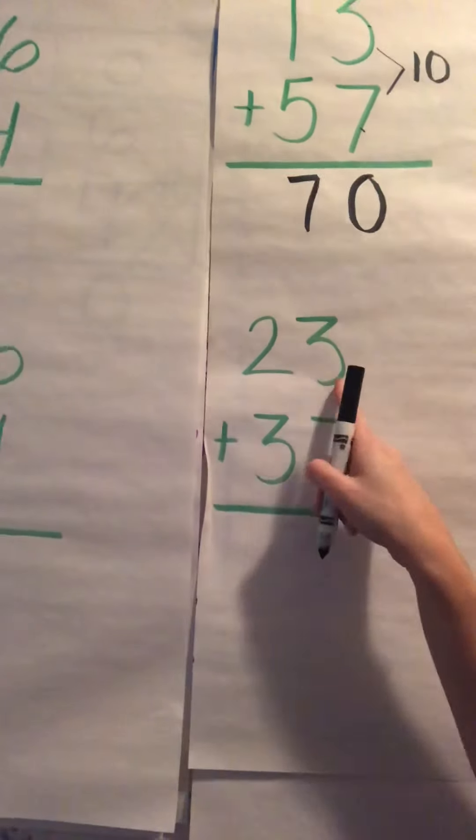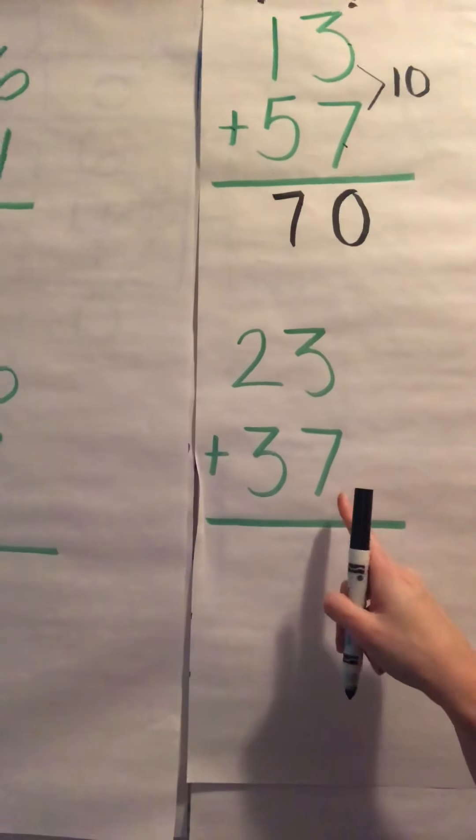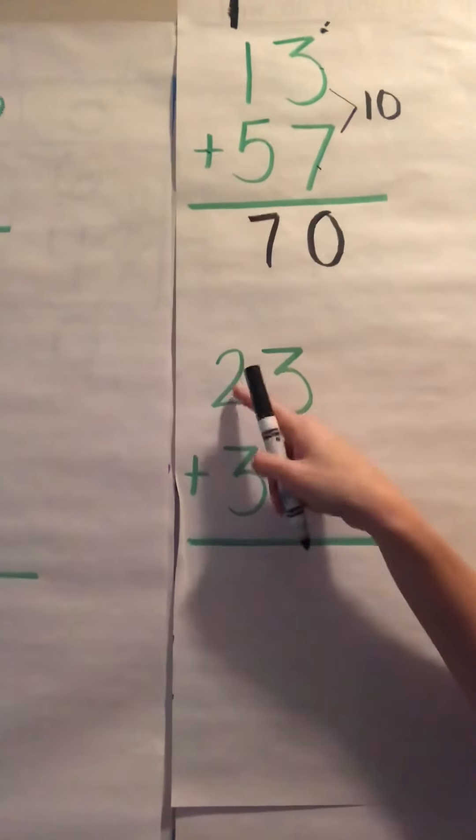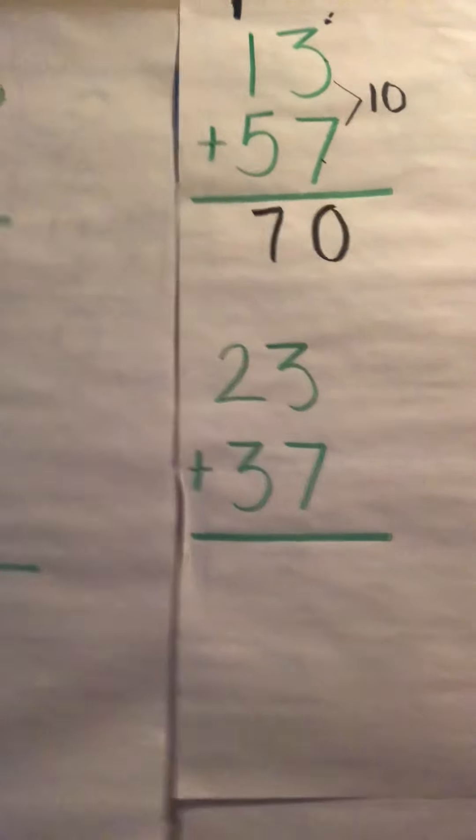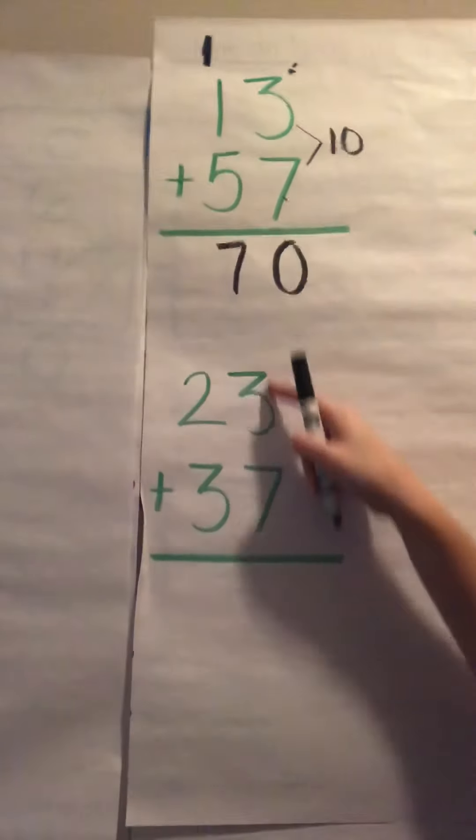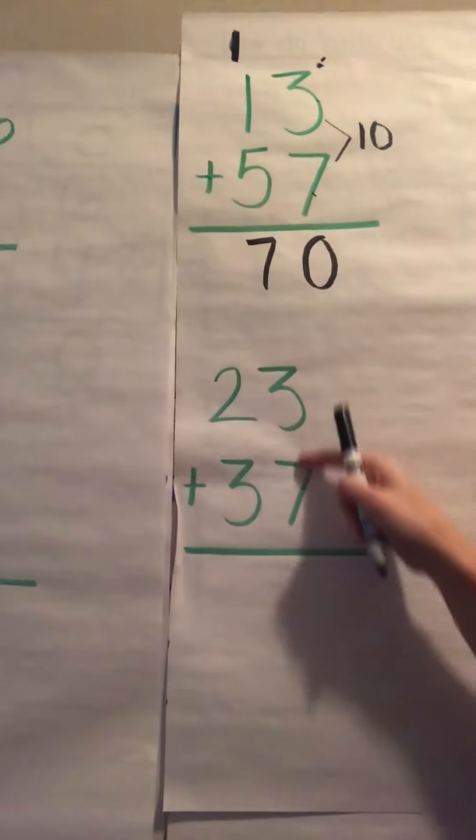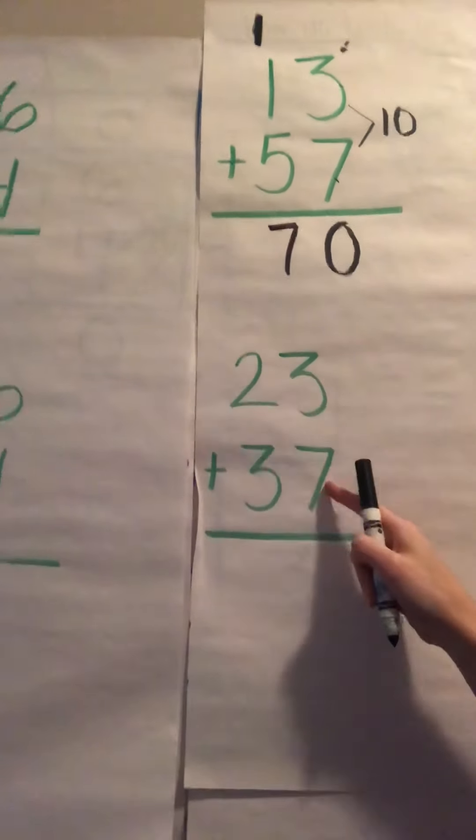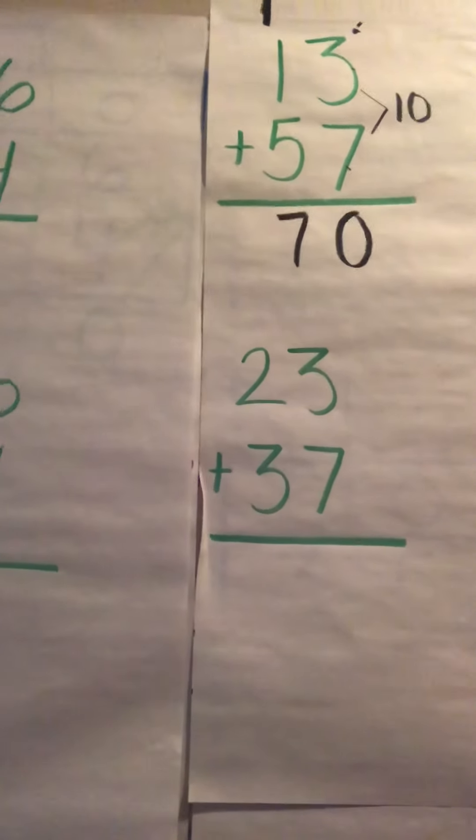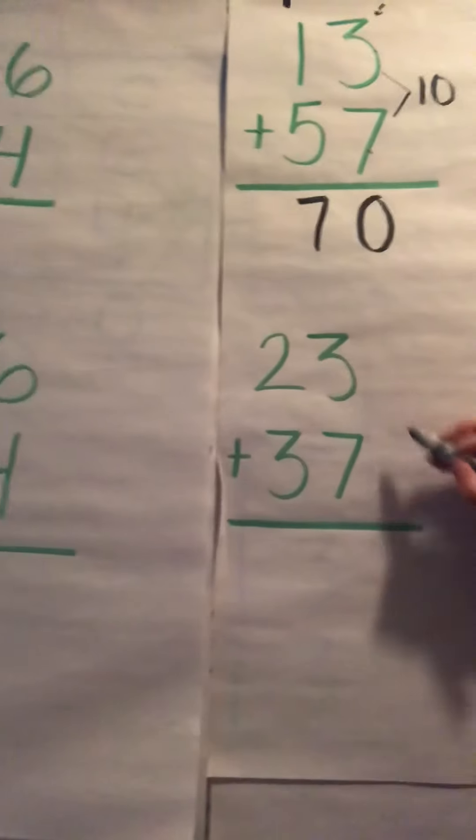Okay, let's do one more problem together. So we have 23 plus 37. Again, do we start on our left or our right side first? Right, we start on our right side where the ones place is. We have a 3 plus the 7 which equals? Right, our 10.